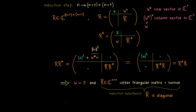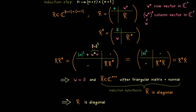So the whole proof by induction is done. The general result to remember is: every upper triangular matrix which is also normal must be a diagonal matrix. Hence the Schur normal form of a normal matrix is a diagonal matrix, and this finishes our proof. The Spectral Theorem is proven: normal matrices are exactly the matrices that are unitarily diagonalizable.